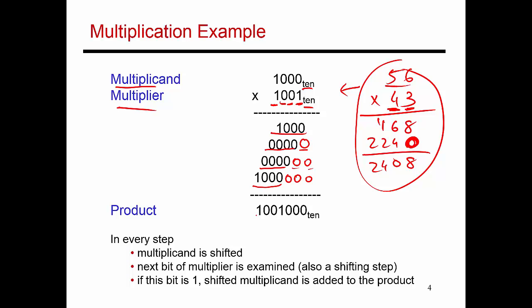Now I add these up, and that gives me the final product, which is this large number over here. Okay, so this is essentially the algorithm that is also going to be used for multiplication in binary.